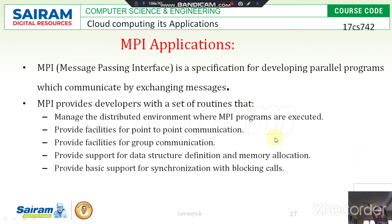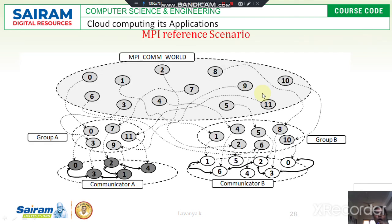Looking at the MPI reference scenario diagram: in the MPI world we have many communicators or clients that are made up of two groups — Group A and Group B. The MPI world contains a set of routines as described.